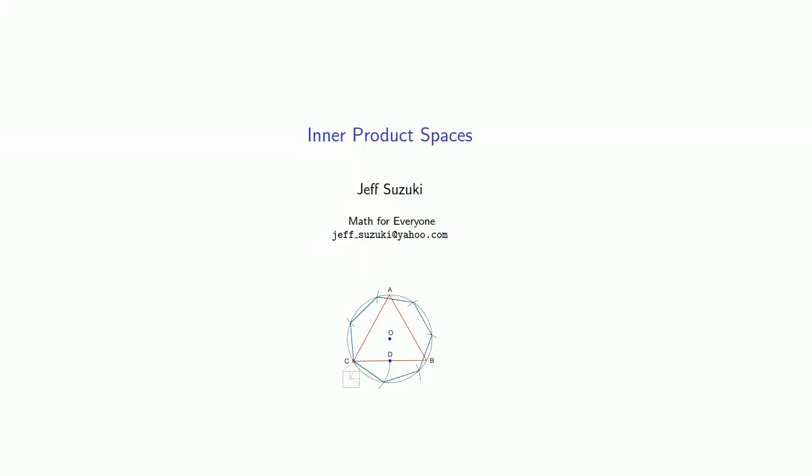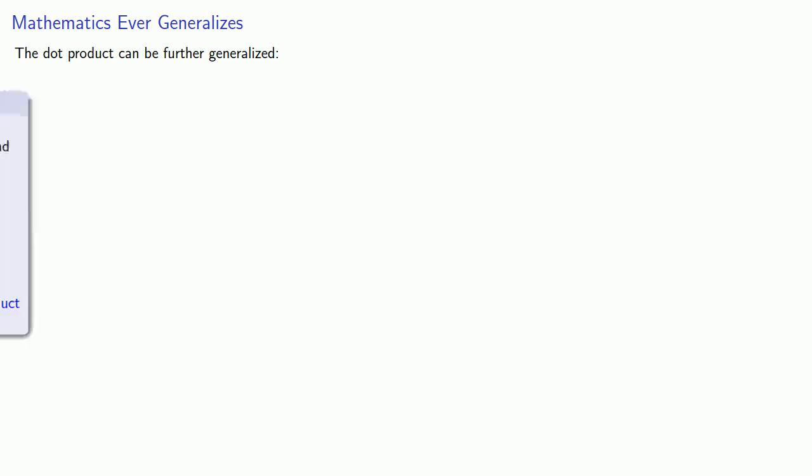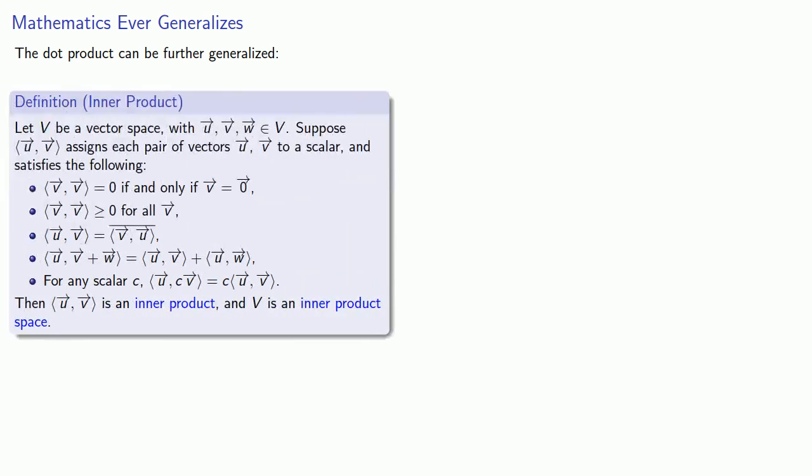The dot product is a very specific instance of what's known as an inner product. The inner product emerges from a mathematician's inclination to generalize a concept. There are several useful features of the dot product that we want to preserve when we generalize it, and so we define an inner product as follows.